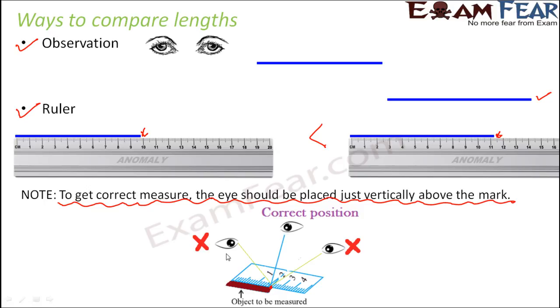You should not look at it from an angular position because the moment you look at it from this position, you do not actually see the point. Instead you read it somewhere here. Similarly when you look at it from here, you read it somewhere here. So you end up reading inaccurate values. Therefore, to avoid errors happening due to angular viewing, it is very important that the eye must be positioned exactly vertically above the mark where you are taking the reading.